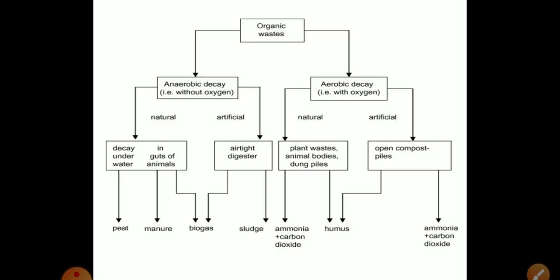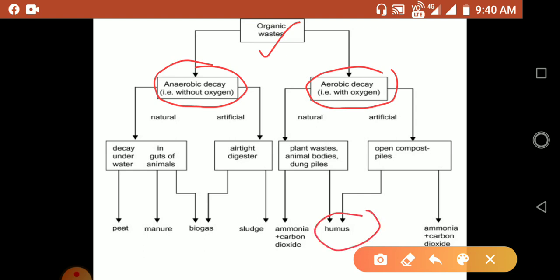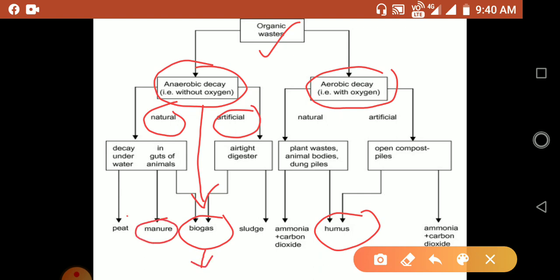This is a flow chart. At the top we have organic waste. For organic waste, two processes may occur: aerobic decay and anaerobic decay. To generate humus or compost we consider both aerobic as well as anaerobic processes. Whereas to generate biogas we adopt anaerobic decay, that is without oxygen. Anaerobic decay takes place naturally as well as by artificial methods, and finally biogas is generated along with a small amount of manure and peat.